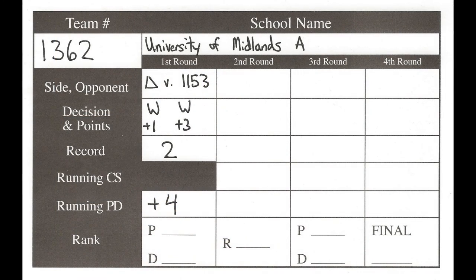Does it matter how badly you beat your opponent or how badly you lose? It does, because that's the next tiebreaker used to rank teams. A team that has two wins but beat its opponent by 40 points would be ranked better than a team that won both ballots but only won by two or three points. That point differential — how badly you beat your opponent — is the next thing we look at to break ties.